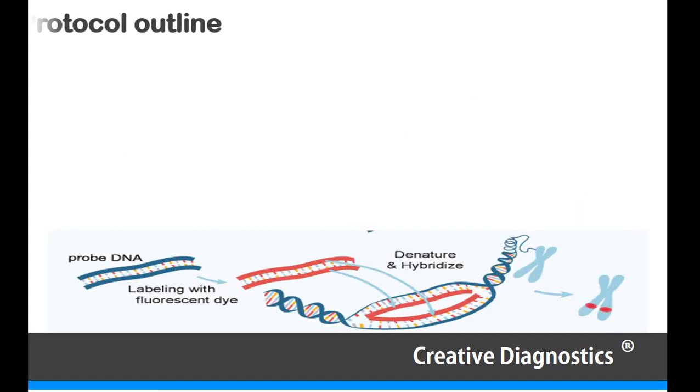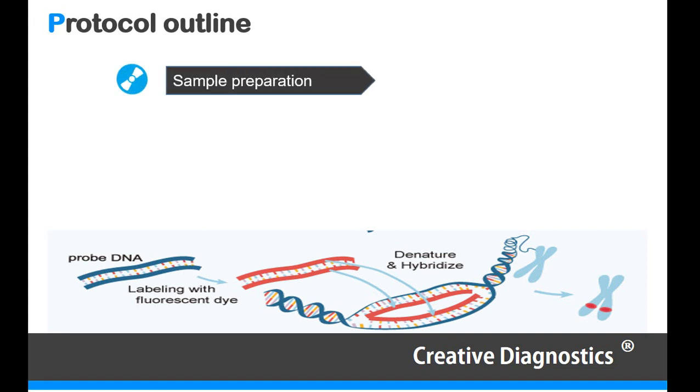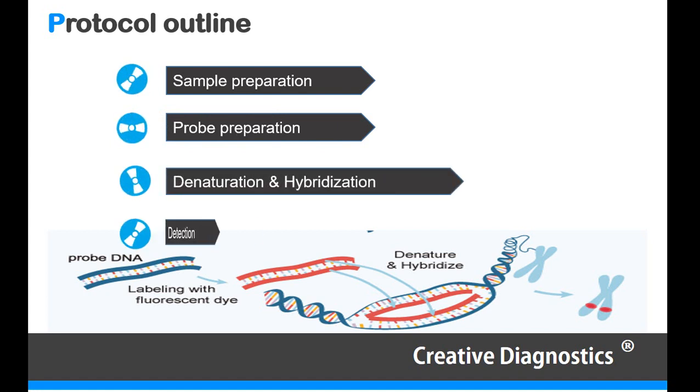The procedure of ISH can be outlined as sample preparation, probe preparation, denaturation and hybridization, and detection.